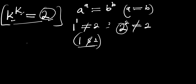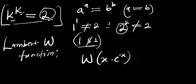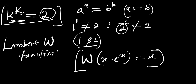The method we are going to use to solve this problem is the Lambert W function. In the Lambert W function, we have: if you take the Lambert W function of x times e to the power of x, this equals x. So we have to express what we have here in the form of x times e to the power of x.